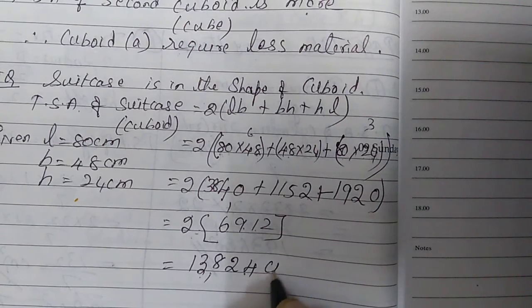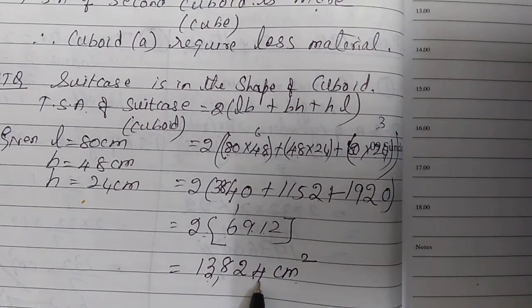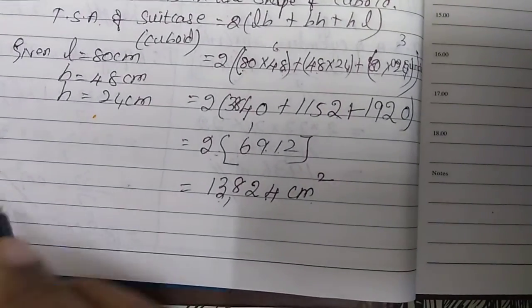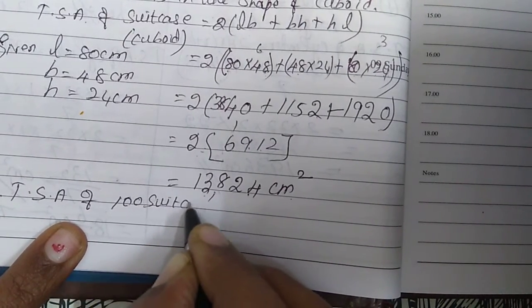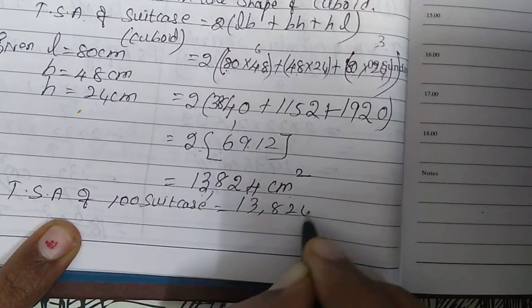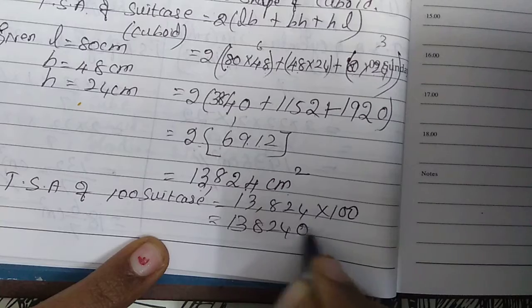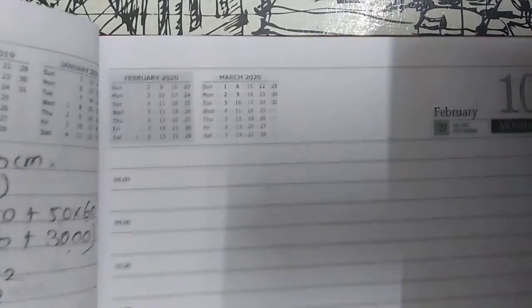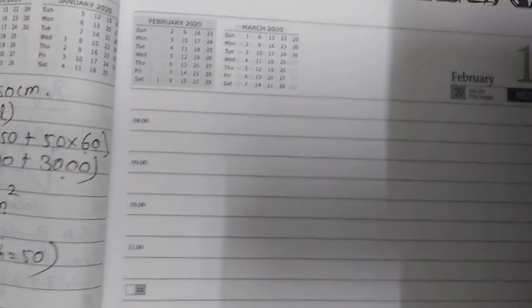Total surface area of one suitcase is 13,824 cm². For 100 suitcases: 13,824 × 100 = 13,82,400 cm². Since the question asks for metres, we now find the area of one metre of tarpaulin.